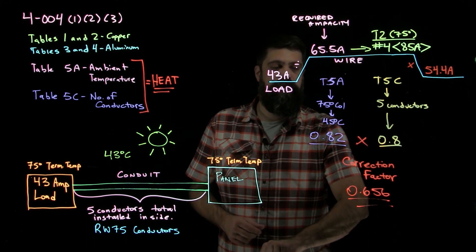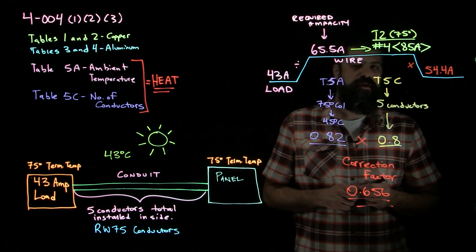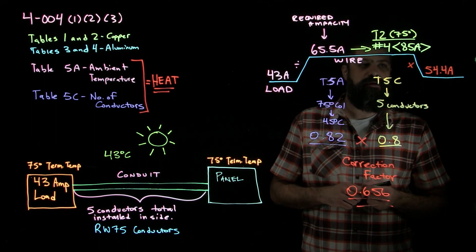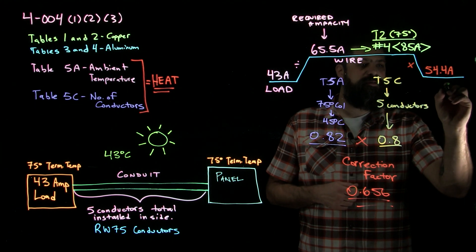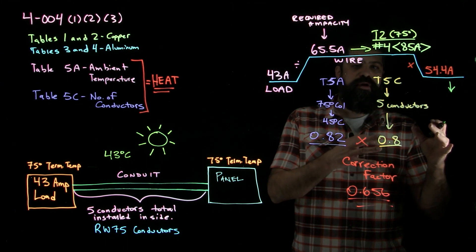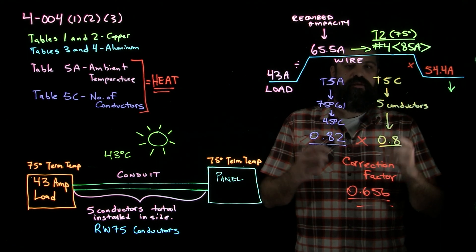Very good. So the last step, of course, is trying to size a breaker based on what we have for loads here. So 54.4 amps in order to find a breaker. Now what is the breaker here to do? The breaker is here to protect the wire.